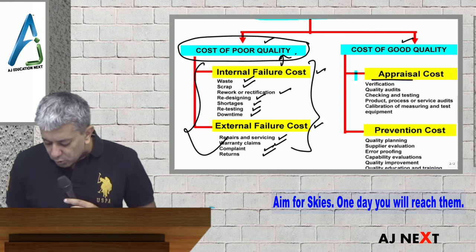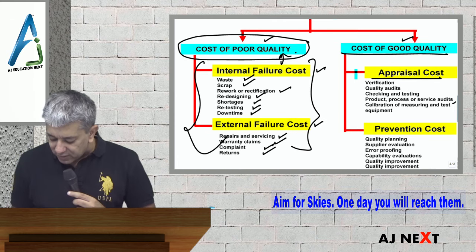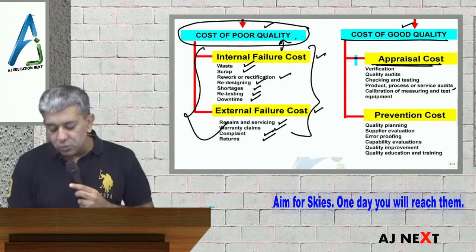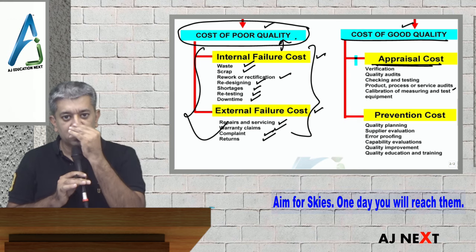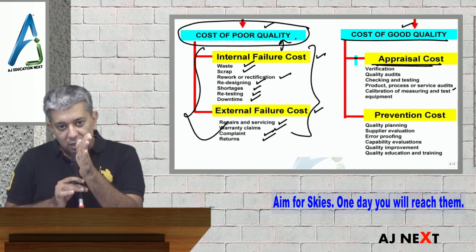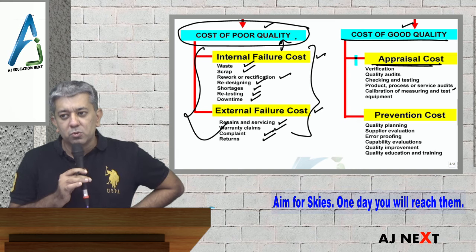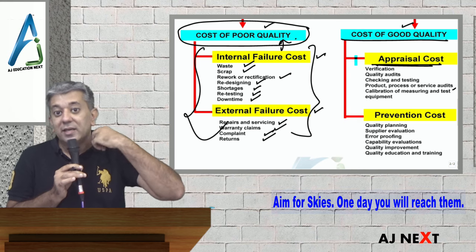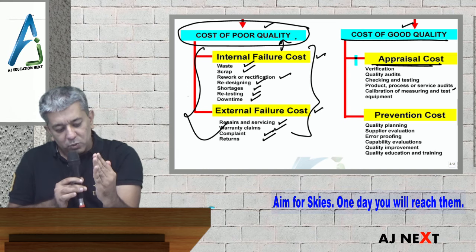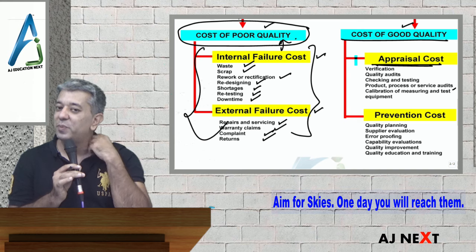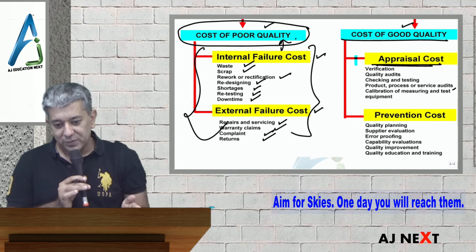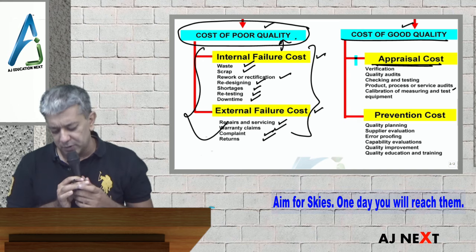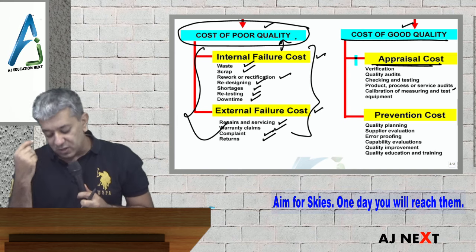So, cost of good quality. In this case we have two types of cost: appraisal cost and prevention cost. Appraisal costs are those costs incurred once the product is made. After I have made the product, I test it and inspect it — whether the product was properly made or not. That is appraisal cost. Remember, if you want to move towards great quality, you have to be ready to bear expenses. Until you spend on these things you will not become a great quality company.